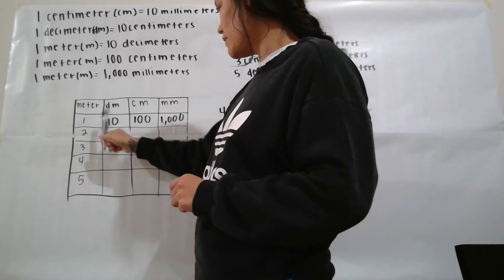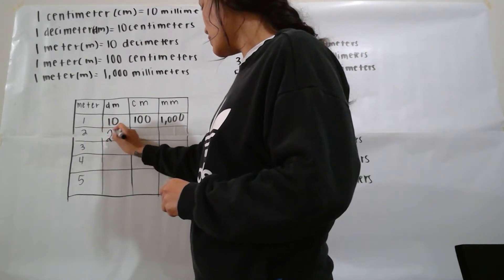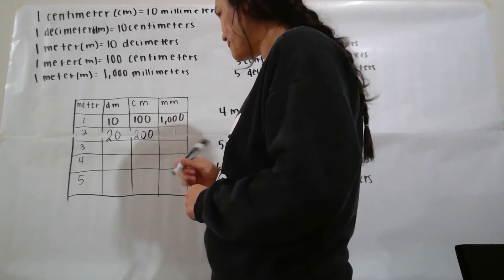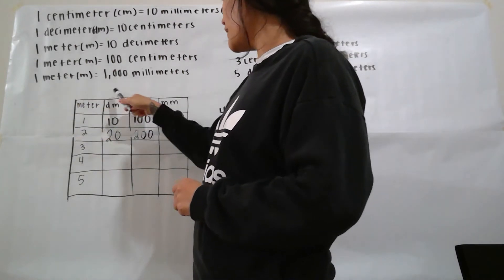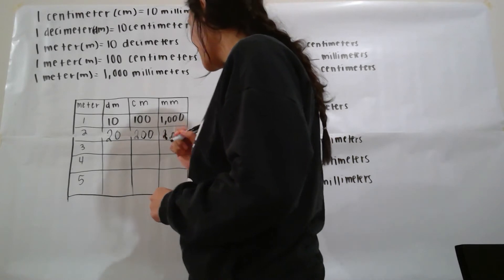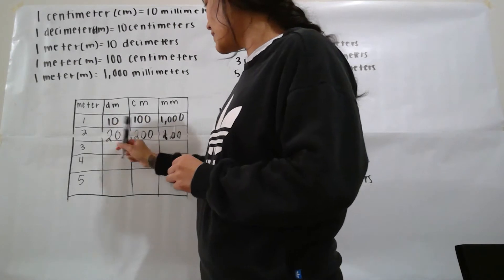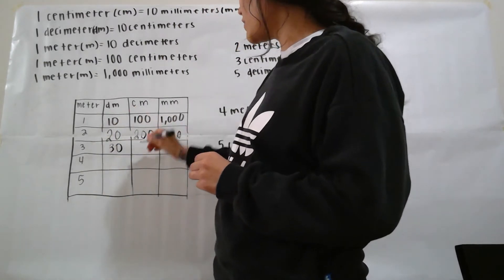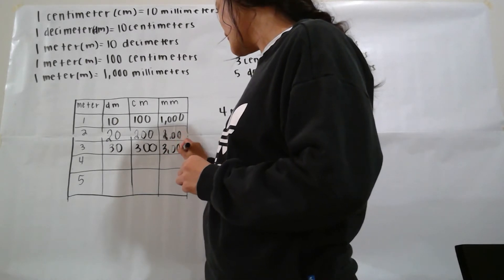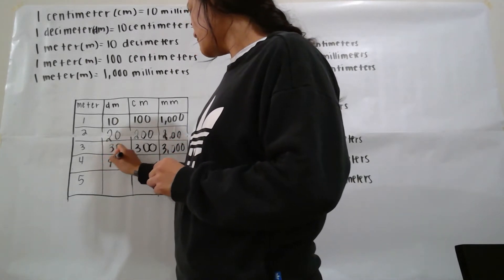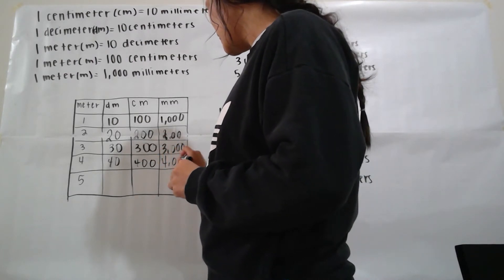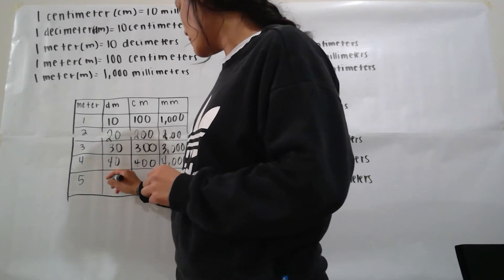For two meters: two times 10 is 20 decimeters, two times 100 is 200 centimeters, and two times 1000 is 2000 millimeters. Three meters: three times 10 is 30, three times 100 is 300, three times 1000 is 3000. Four meters: four times 10 is 40, four times 100 is 400, four times 1000 is 4000. Five meters: five times 10 is 50.